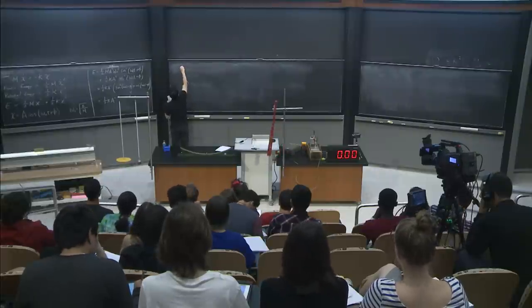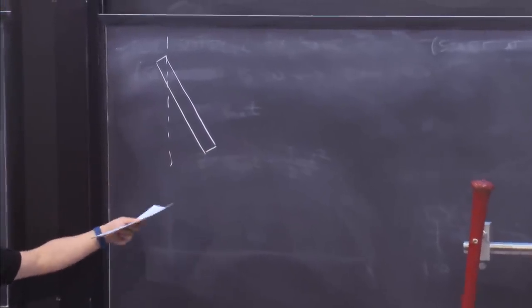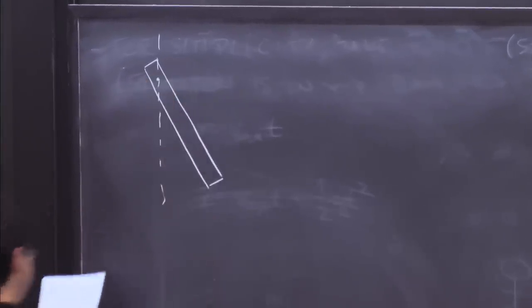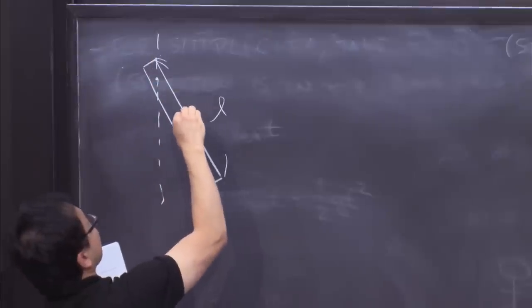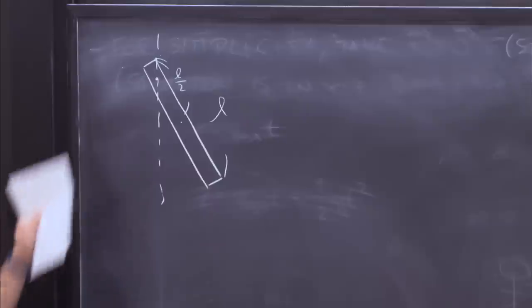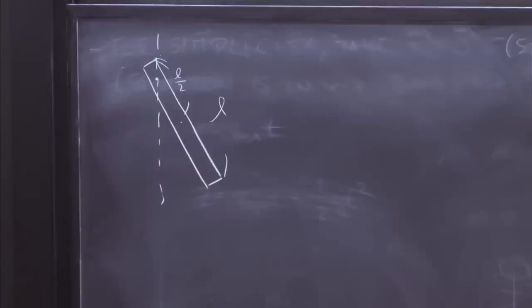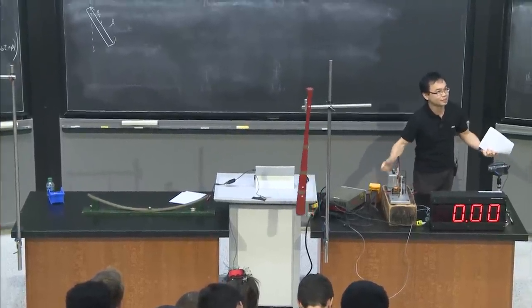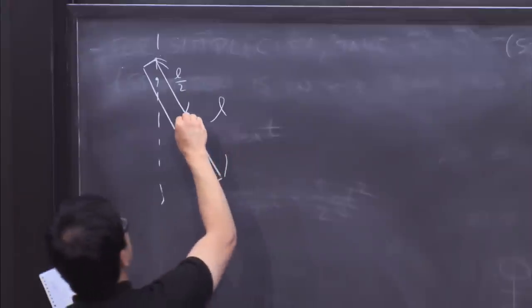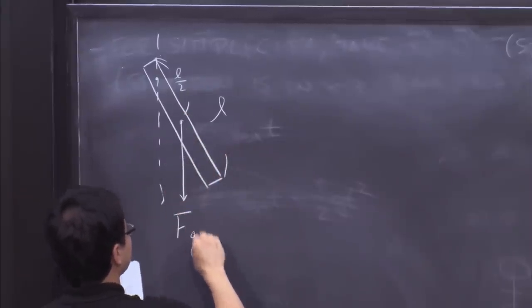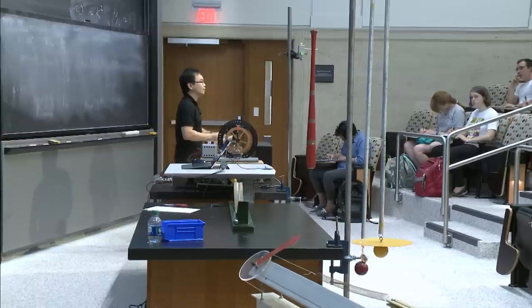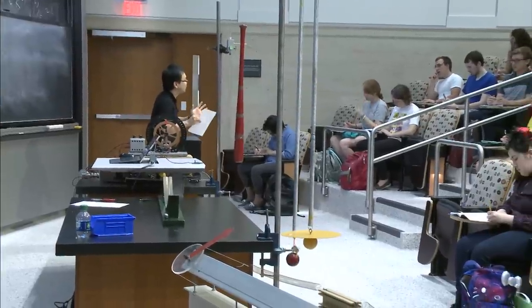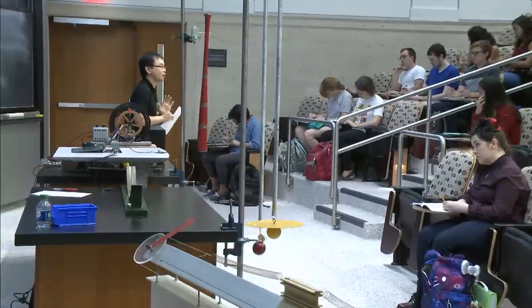Let's do the calculation as another example. I have a rod with mass uniformly distributed, nailed to the wall. The length of this rod is l, so the center of mass is at l/2 with respect to the nail. The system is on Earth, so there will be a gravitational force Fg = mg pointing downward.